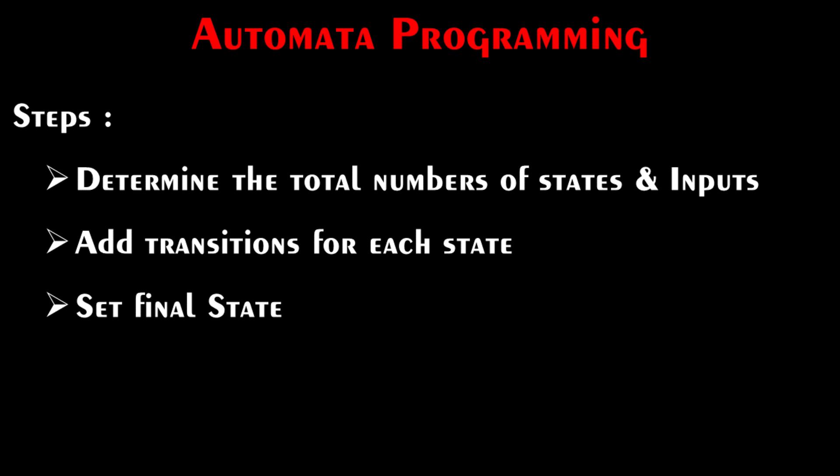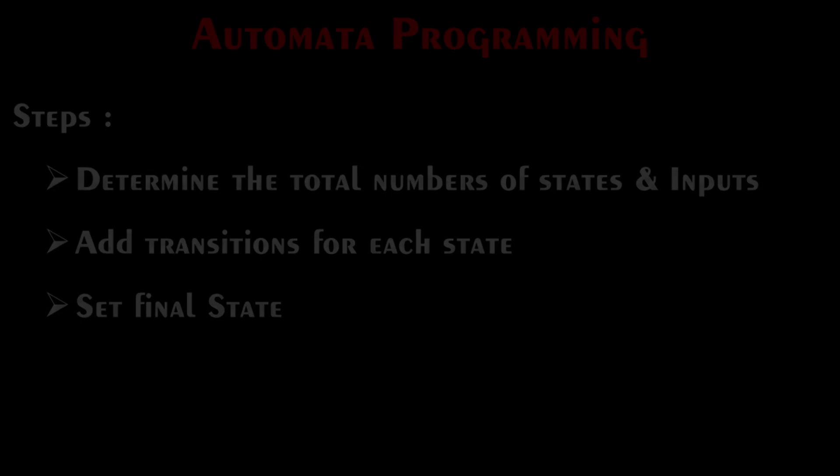DFA programming is quite simple and it involves three basic steps: determining the total number of states and inputs for the given problem, then adding transitions for each state, and finally setting the final state.